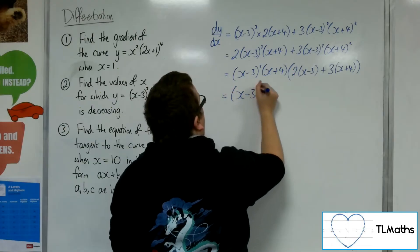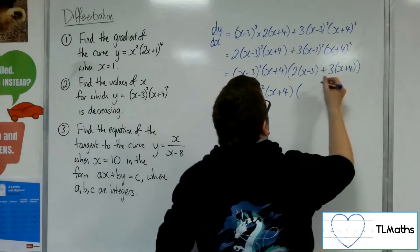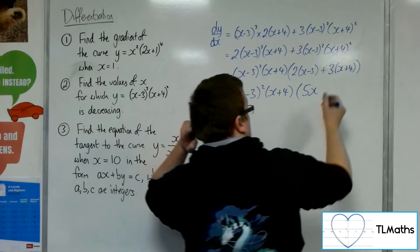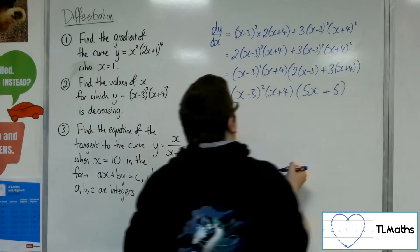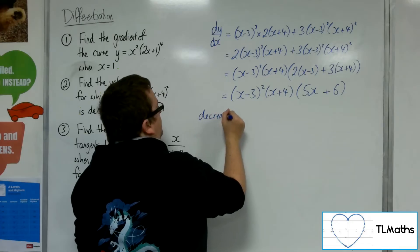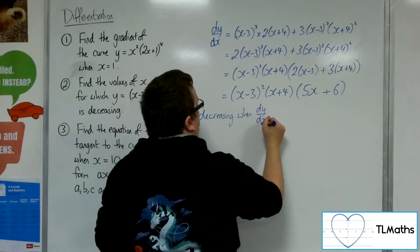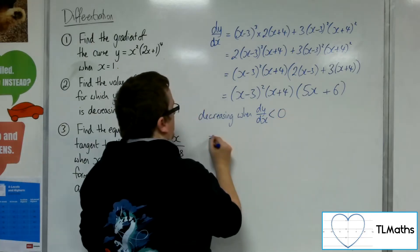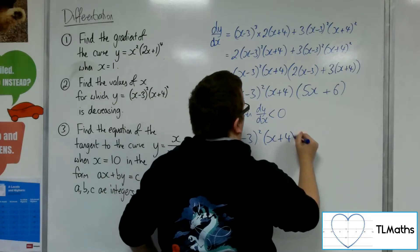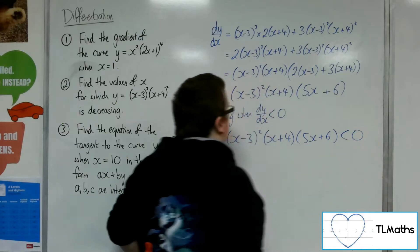So let's simplify this. So we've got 2x plus 3x, so 5x. Then we've got minus 6 plus 12, so plus 6. So decreasing when dy by dx is negative. So I'm solving the inequality of that when it's negative.